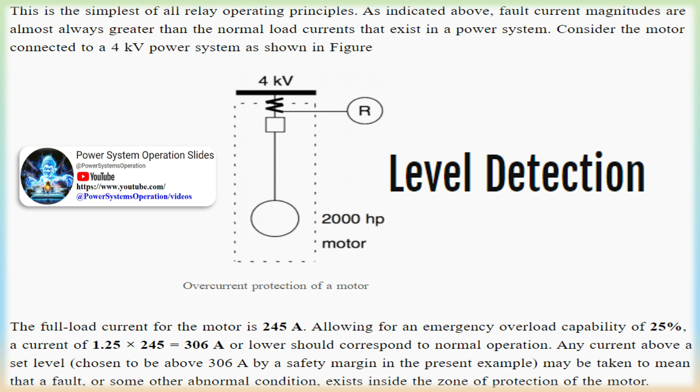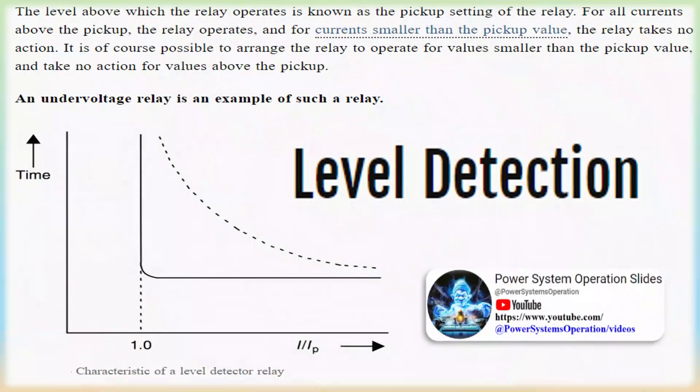Level detection. This is the simplest of all relay operating principles. As indicated above, fault current magnitudes are almost always greater than the normal load currents that exist in a power system.